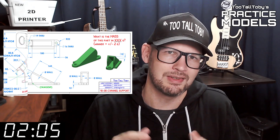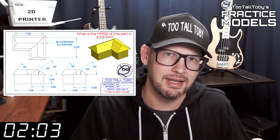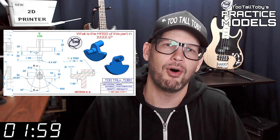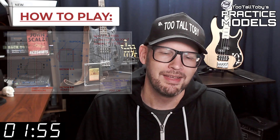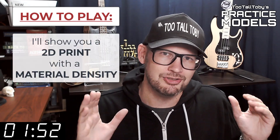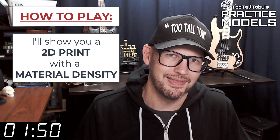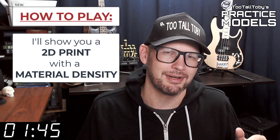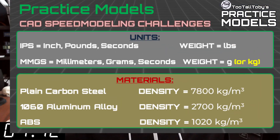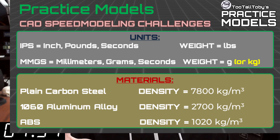If you're here for the first time, welcome. The goal of this video series is to provide you with good quality 2D prints that have all the dimensions and information you need to create a 3D model. Here's how these challenges work: I'm going to show you a 2D print when this timer gets to zero. On that print you're going to see a material property and a material density — it's going to be one of these three material properties. So take a moment, grab a screen capture of what's on the screen right now and be sure that your materials in your library match these properties.